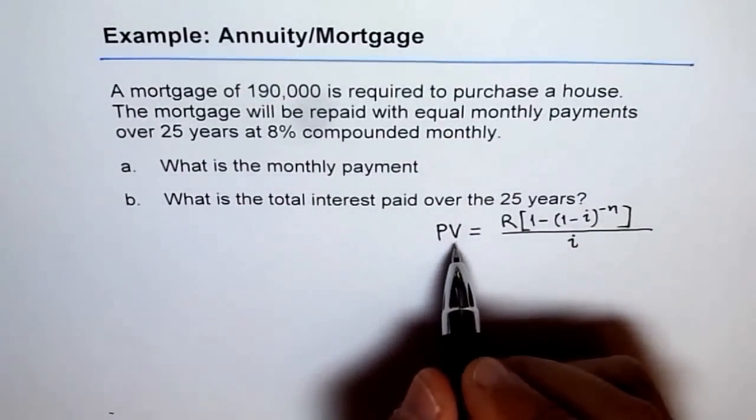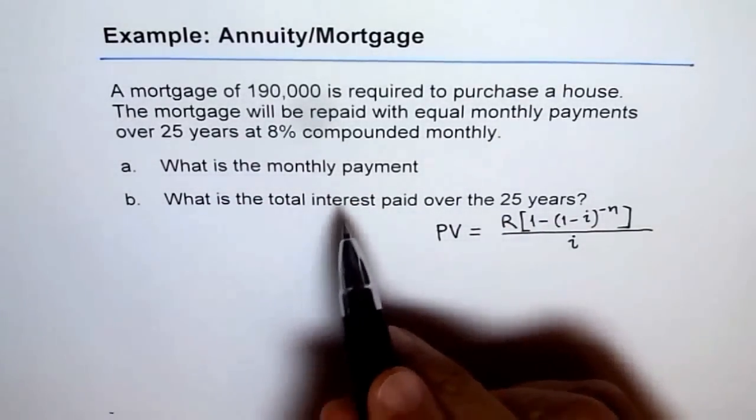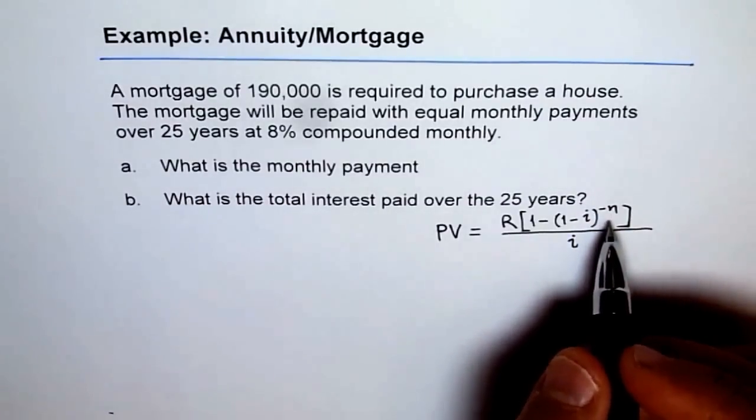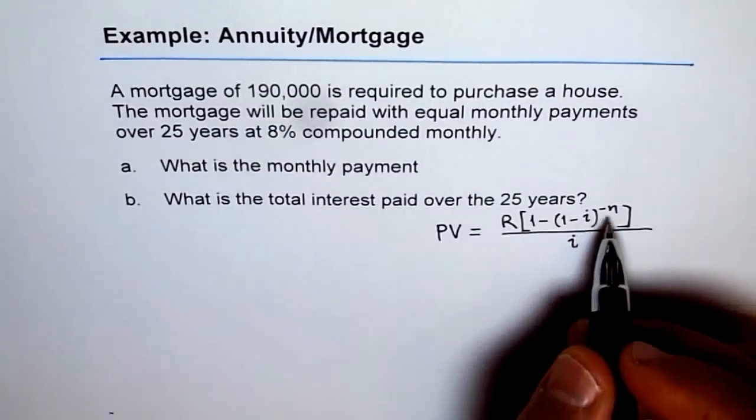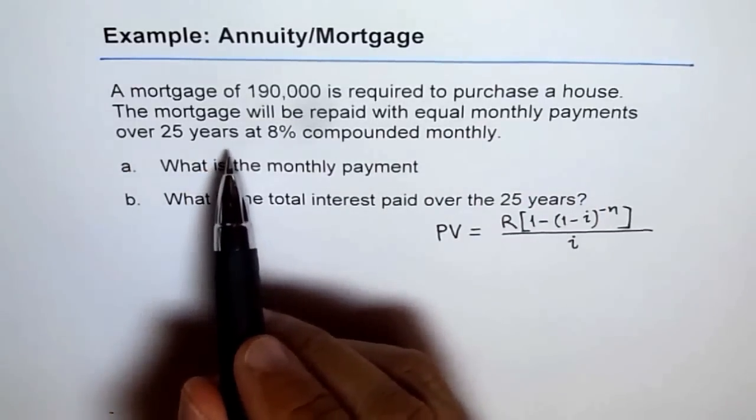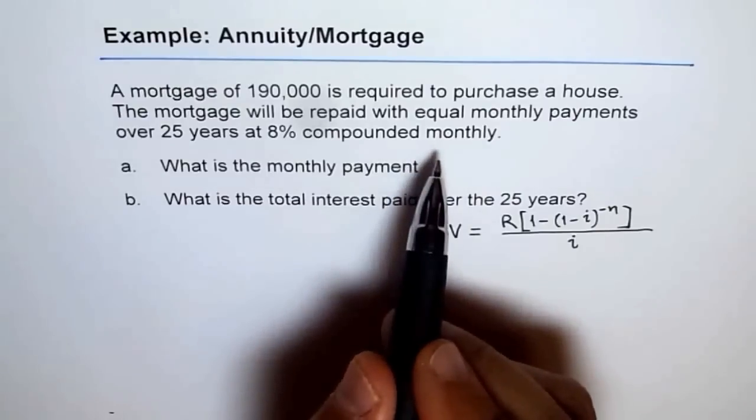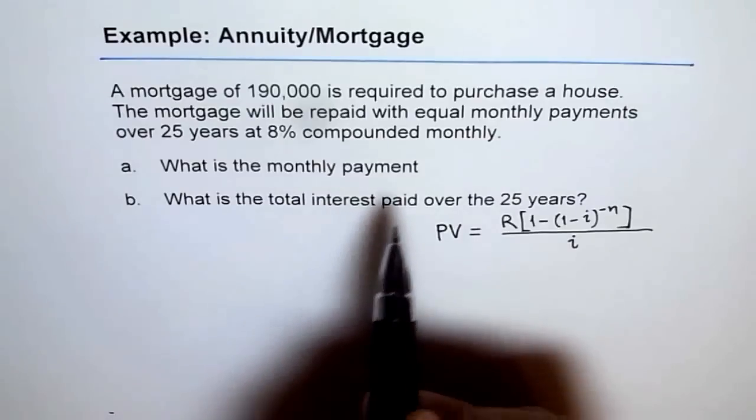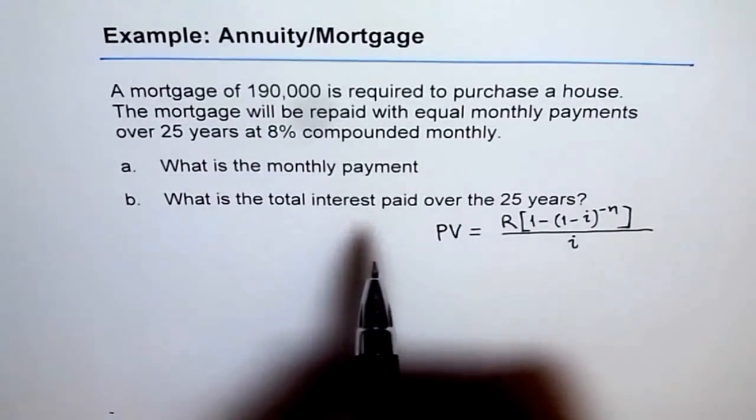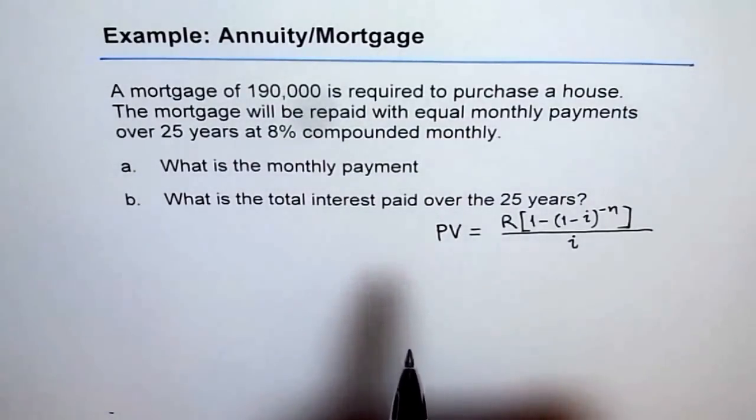PV is the present value and R is the monthly regular payments. Sometimes I use the word recurring, but these are regular payments which you pay at the end of the month. I is the interest and N is the compounding periods. Let's see what is N first. N is the compounding periods. The mortgage will be repaid with equal monthly payments over 25 years at 8% compounded monthly. So every year 12 times you have to make this payment, and interest is charged. We are assuming it to be a simple annuity, the ordinary one, so interest is being charged monthly and the payments are being made monthly, at the end of the month.